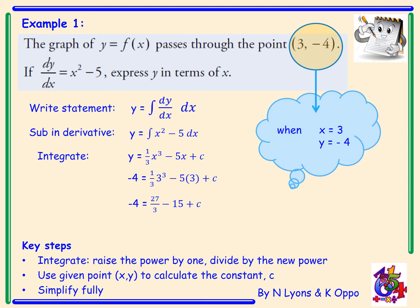So -4 equals 27/3 minus 15 plus c. When I simplify that down, I've got c equals 2.